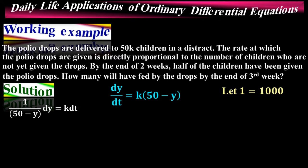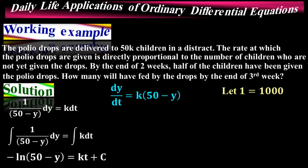If you are not sure about separable differential equations, go back and review that section — this follows exactly the same procedure. Taking integration on both sides: the integral of 1/(50 − y) dy equals the integral of k dt. The left side integrates to −ln|50 − y|, and the right side gives kt + C.